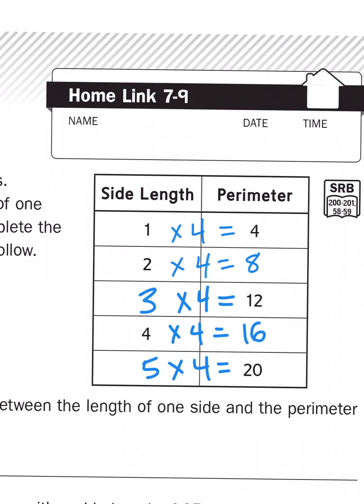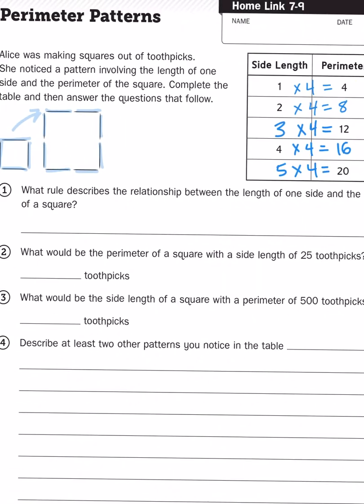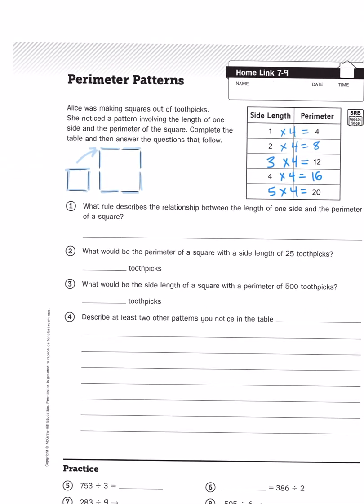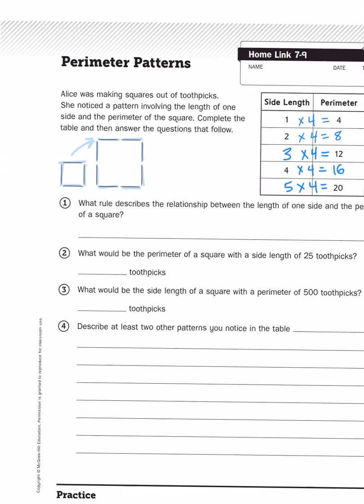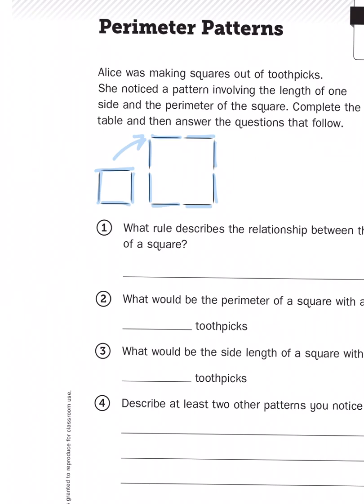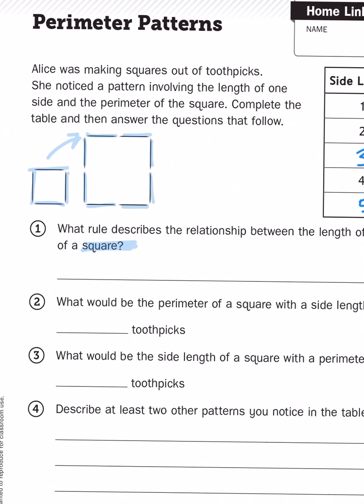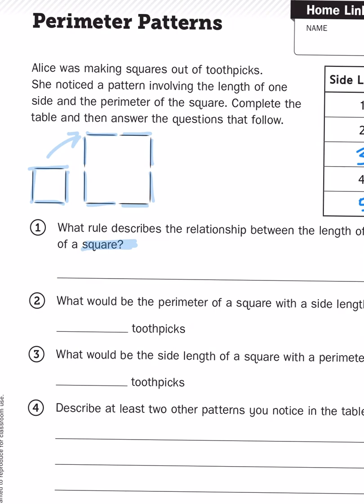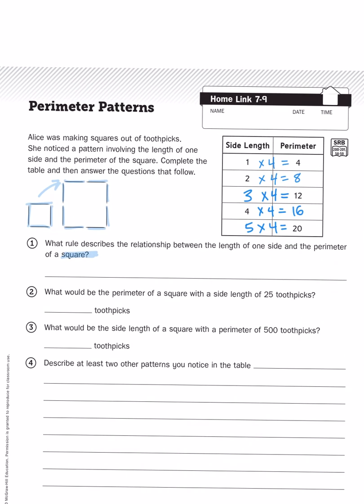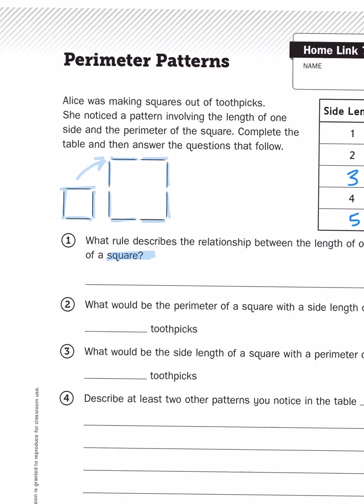This table is just helping us identify the relationship between the length of one side and the perimeter of a square. If a square has equal sides, then I know that the length of one side is going to be one-fourth of the perimeter, or another way...